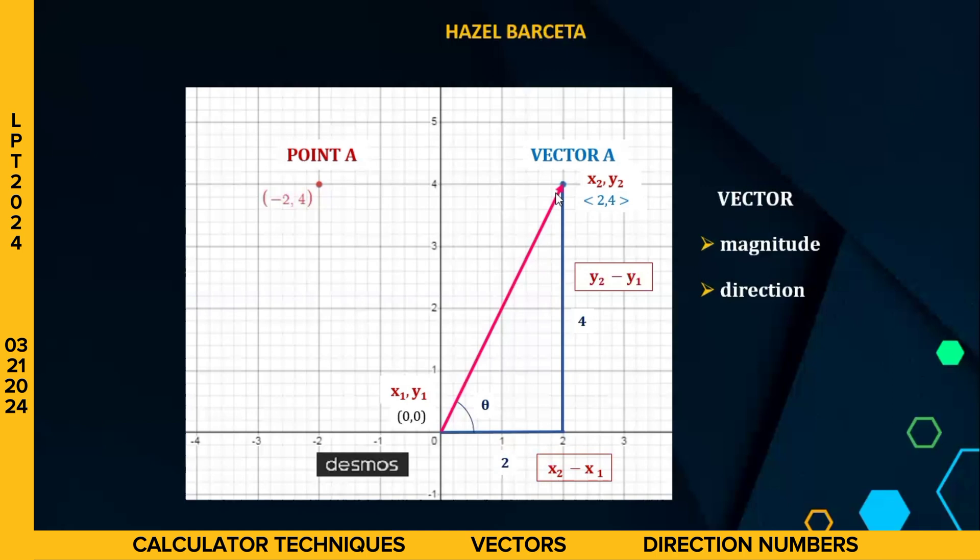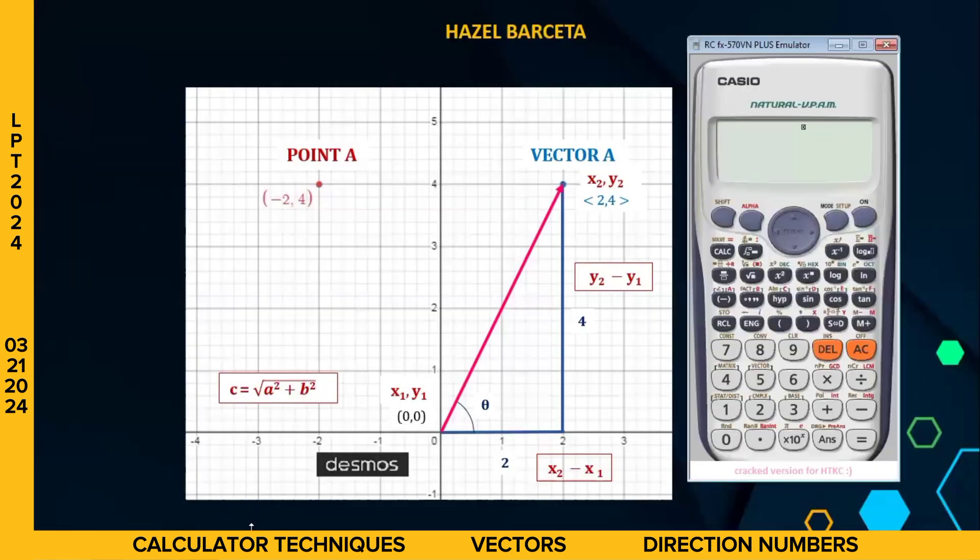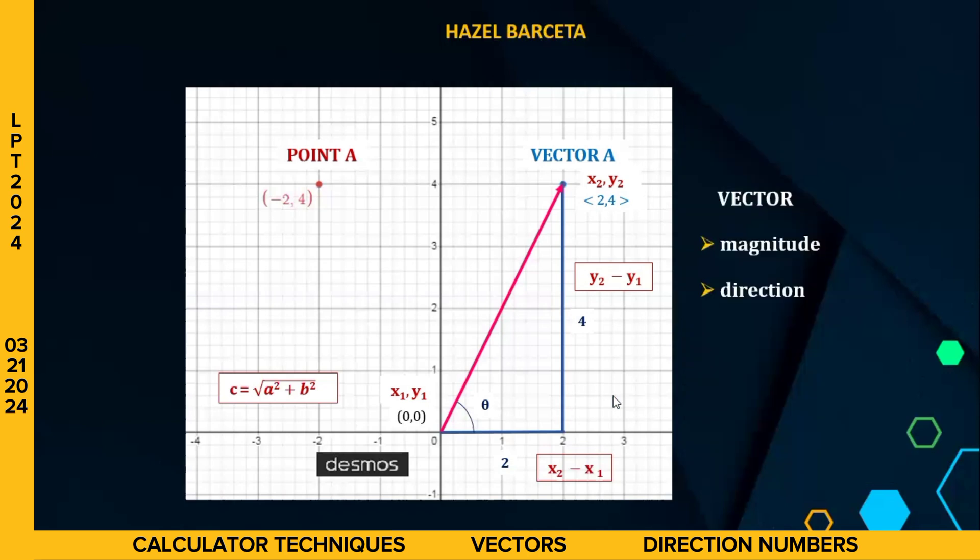In order to solve for the hypotenuse, considering a right angle triangle, we can use the, yes po, Pythagorean theorem. Or we can use distance formula. So the hypotenuse, which is the C, A, B, so either of the two. So we will now have, let's get our calculator. We will now have square root of 2 squared plus 4 squared, which is equal to 2, the square root of 5. So the magnitude of vector A is equal to 2, the square root of 5.